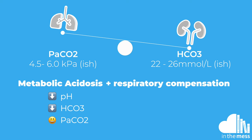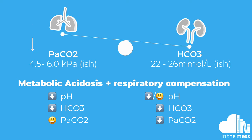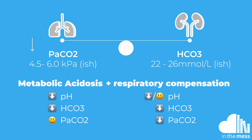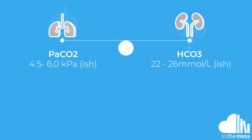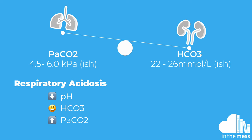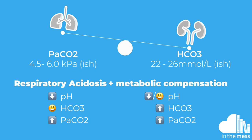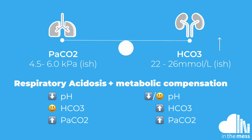I wish that was it, but there's also the concept of compensation to throw in there. A metabolic acidosis with respiratory compensation has a low-normal pH, low bicarbonate, and low PaCO2 — the body is ventilating more and blowing off more CO2, which can occur relatively quickly. A respiratory acidosis with metabolic compensation has a low or normal pH, high bicarbonate, and high PaCO2 — the body is producing more bicarbonate to counteract the raised PaCO2. This is usually seen in the chronic CO2 retainers in the respiratory disease population.